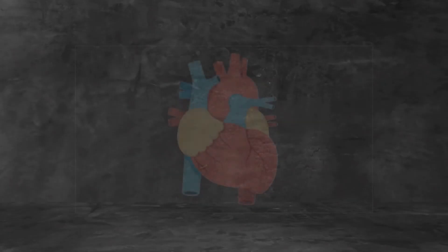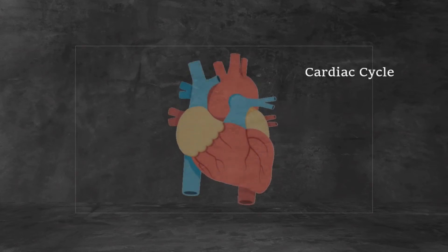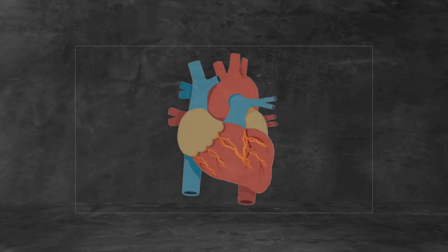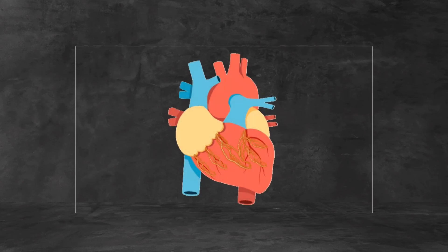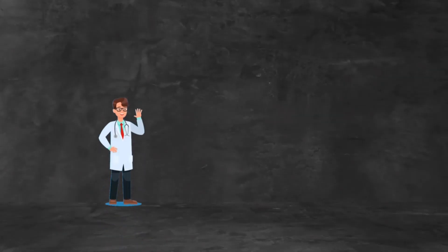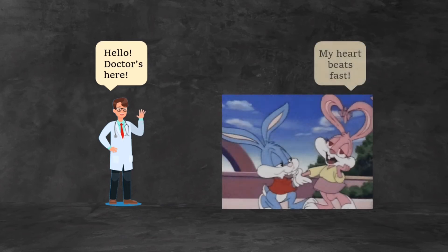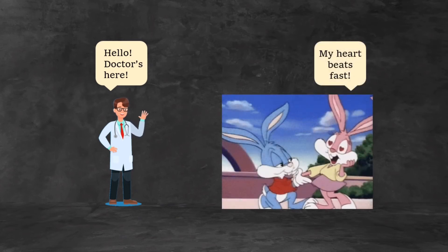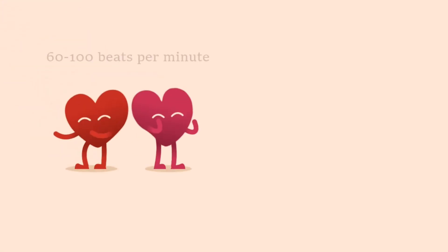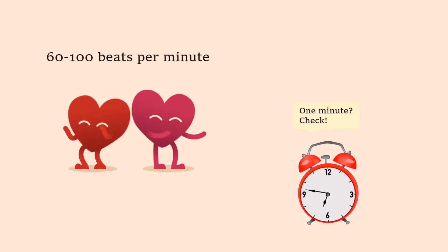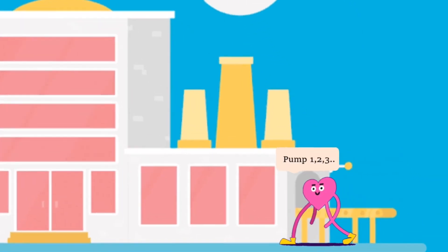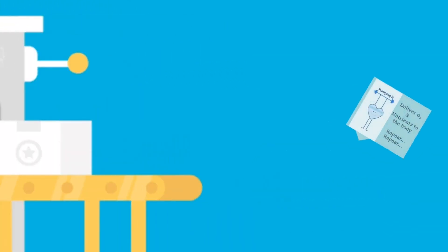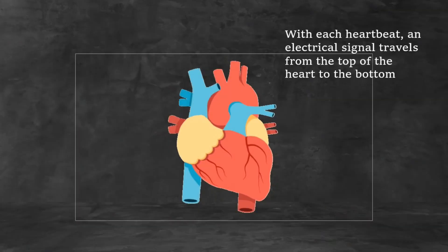The alternating contraction and relaxation of the myocardium in the walls of the heart chambers is called the cardiac cycle. Your heart has a special electrical system called the cardiac conduction system that controls the rate and rhythm of the heartbeat. The contraction of the atria and ventricles makes a heartbeat. When your heart beats, it makes a lub-dub sound. Your heart beats an average of 60 to 100 beats per minute, pumping about 5 quarts of blood through your arteries per minute, delivering a steady stream of oxygen and nutrients all over your body.